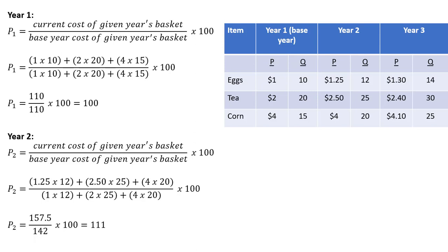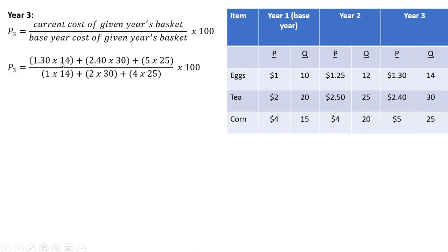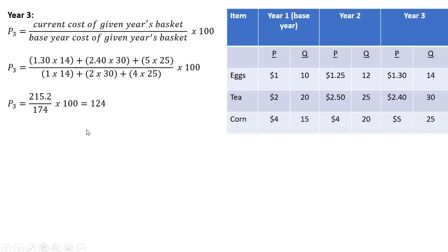Let's move on to year three. In the numerator, the current cost of year three's basket is $1.30×14 + $2.40×30 + $5×25. For the denominator, we use base year prices multiplied by year three quantities: $1×14 + $2×30 + $4×25. Doing the math, we get 215.2 divided by 174, all multiplied by 100, so the year three index number is 124.